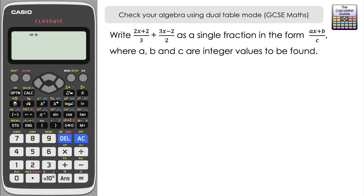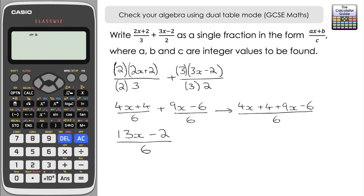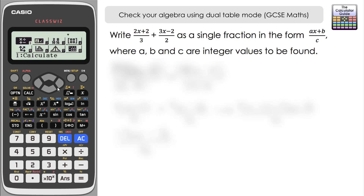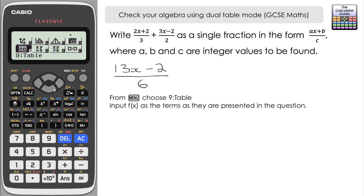Here's our solution: I got (13x - 2)/6, so a = 13, b = -2, and c = 6. Let's go to table mode to verify this. Press 9 for table mode, and we're prompted for FX. For FX, we're going to input the algebraic terms we were originally presented with — that is, the two fractions from the question.